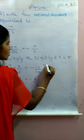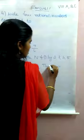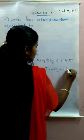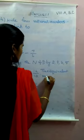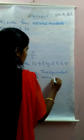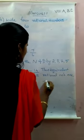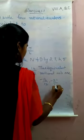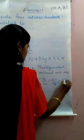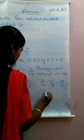So what is the answer? The equivalent ratios. The four equivalent rational numbers are minus 14 by 12, minus 21 by 18, minus 28 by 24, and minus 35 by 30.